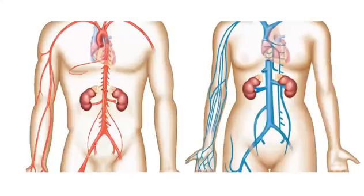We call it common because it's about to branch, and indeed it does — into an external iliac artery, which goes externally onto the anterior portion of the thigh, and then the internal iliac artery, which continues down onto the pelvis. And again, we have both a right version and a left version of those.